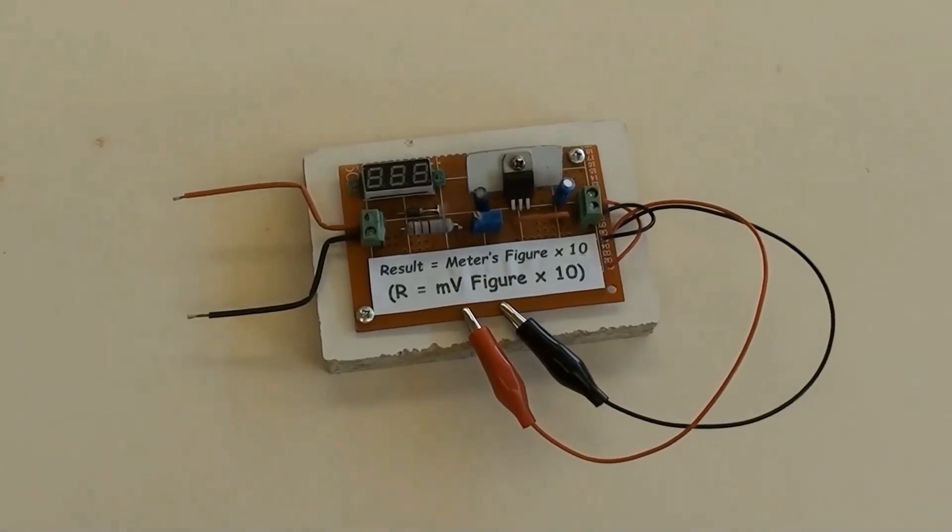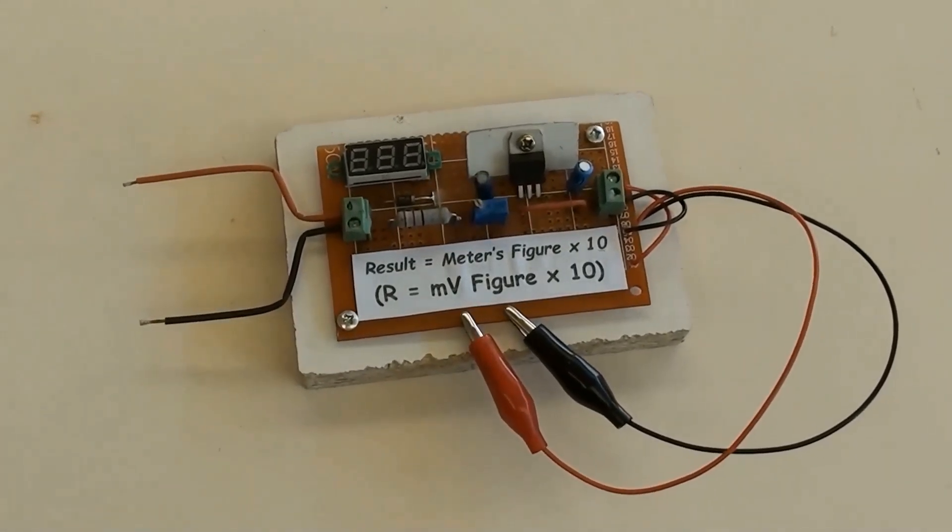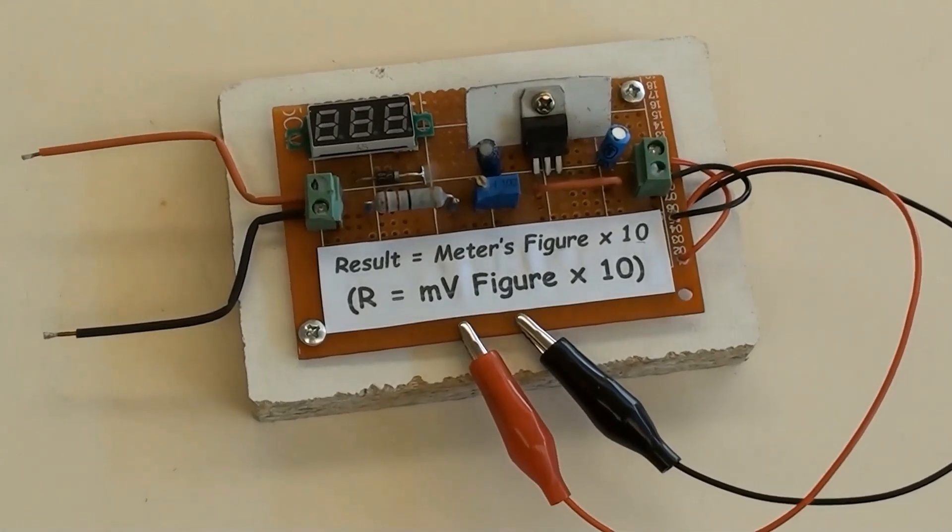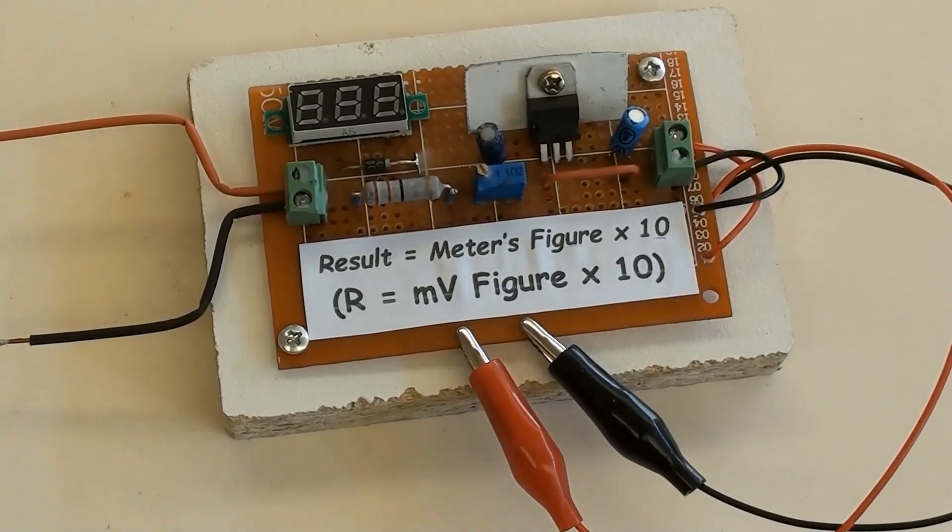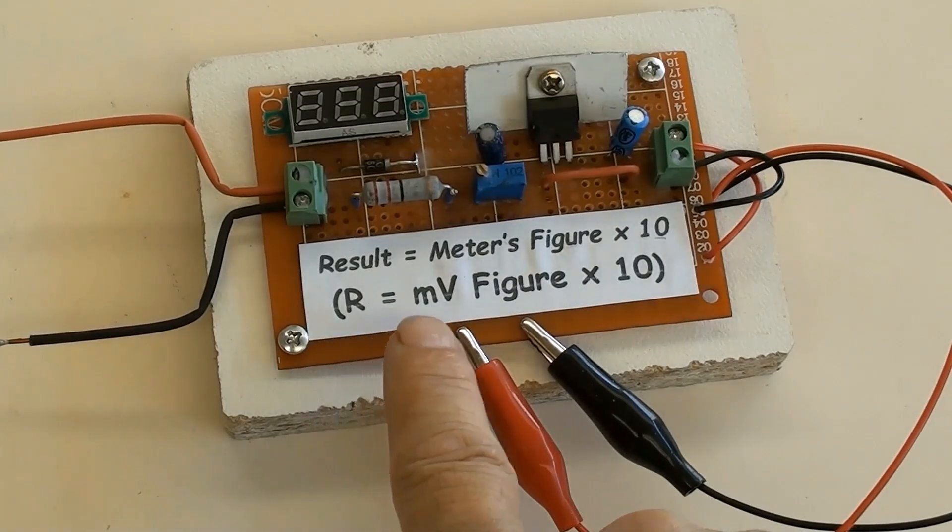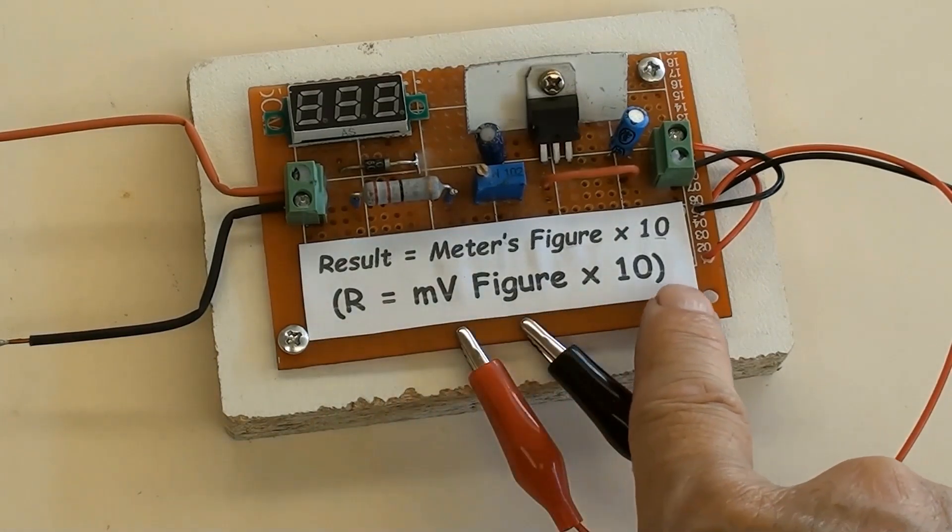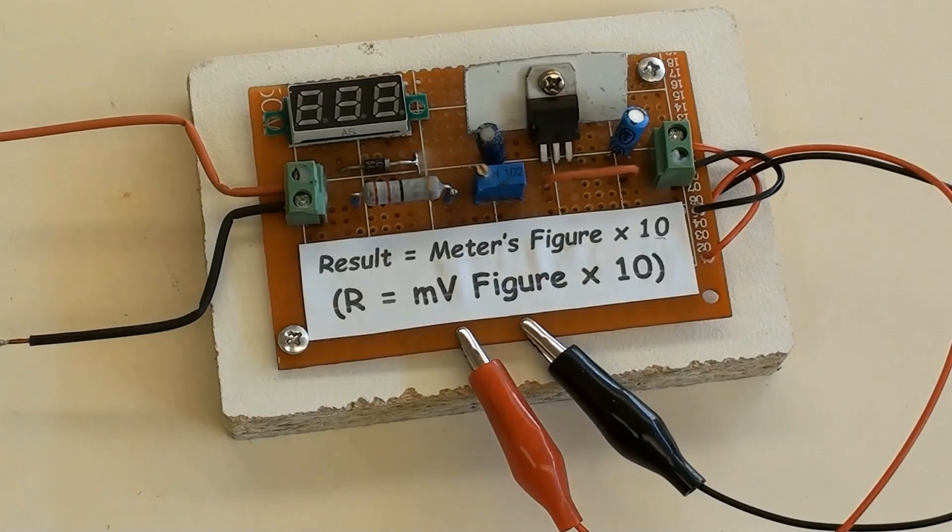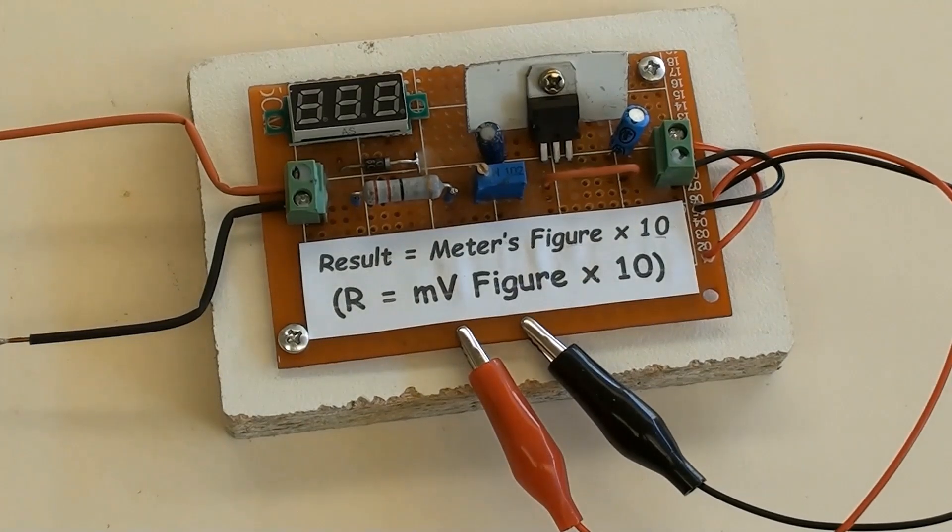For convenience to use, the whole PCB underneath has been fixed to a piece of small board as a base, and a sticker on the top of PCB which indicates how to get the result. That is, multimeter measured figure millivolts times 10.